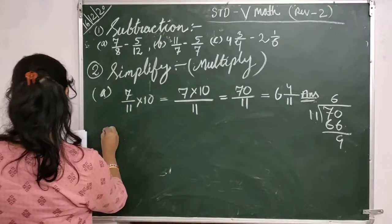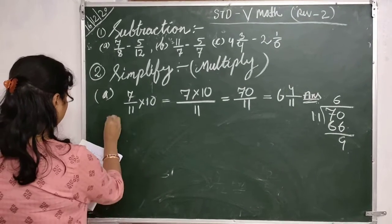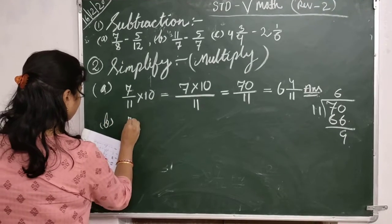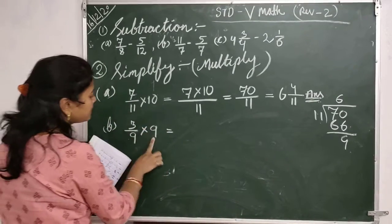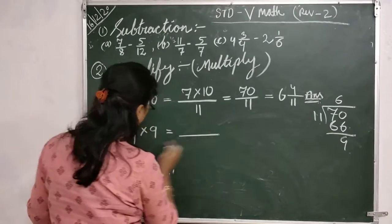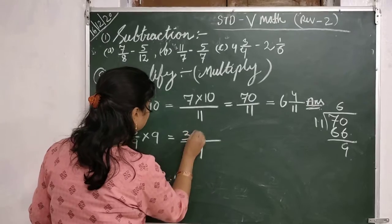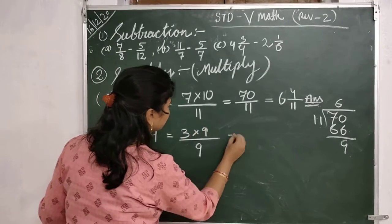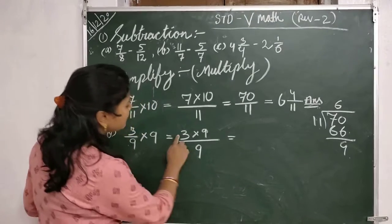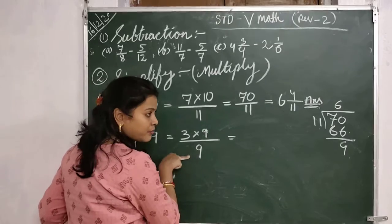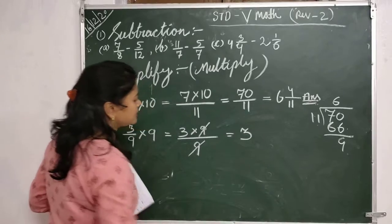The next one is 3 by 9 multiplied by 9. Here also this is the fractional number and 9 is the whole number. Similarly, write the same denominator 9. Then 3 into 9 — you can simplify: 9 in the numerator and 9 in the denominator cancel. So your answer is 3.